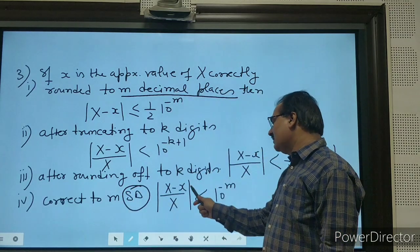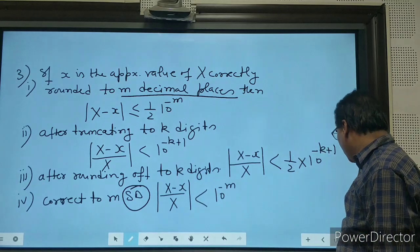This formula becomes: |X - x|/|X| < 10^(-m).